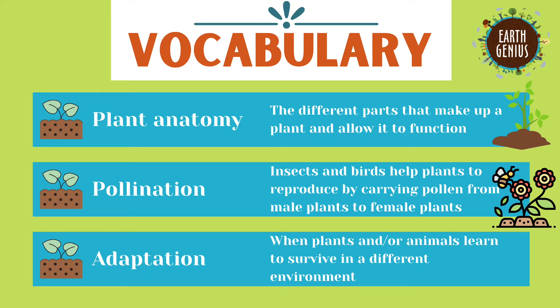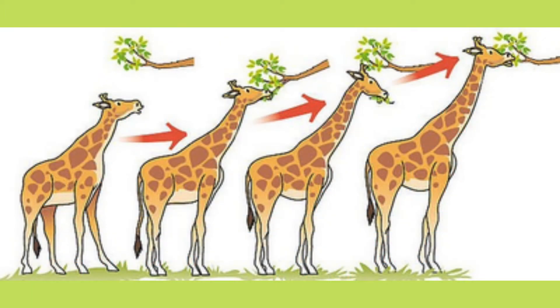Adaptation is when plants or animals learn to adapt or change to fit their environment and survive better. Can you think of different types of adaptations? For example, giraffes over time developed longer and longer necks so that they could reach the higher branches of trees and have more food available to them, and this helped them survive longer.